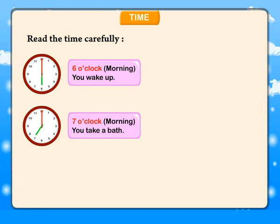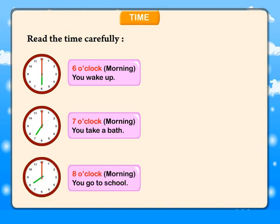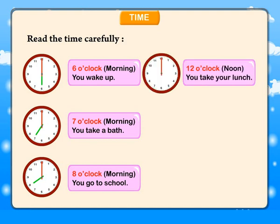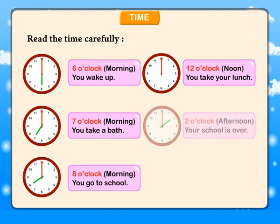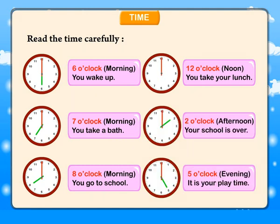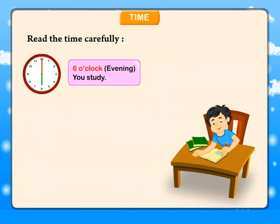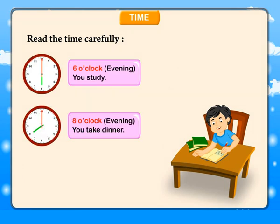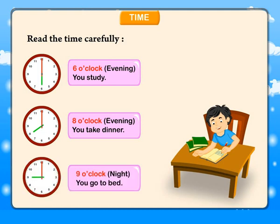Read the time carefully. 6 o'clock morning — you wake up. 7 o'clock morning — you take a bath. 8 o'clock morning — you go to school. 12 o'clock noon — you take your lunch. 2 o'clock afternoon — your school is over. 5 o'clock evening — it is your playtime. 6 o'clock evening — you study. 8 o'clock evening — you take dinner. 9 o'clock night — you go to bed.